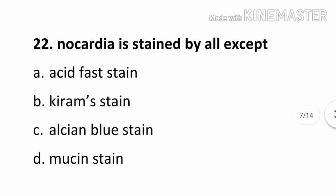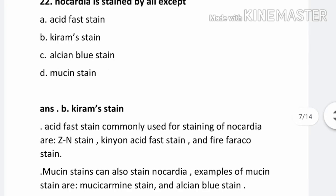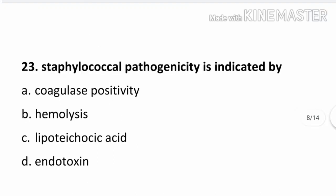Question number 22. Nocardia is stained by all except: Option A. Acid fast stain, Option B. Chyrem's stain, Option C. Alcian blue stain, Option D. Mucin stain. The correct answer is B. Chyrem's stain. Nocardia is not stained by Chyrem's stain. Acid fast stain, commonly used for staining of Nocardia — Z-N stain and Kinyoun's acid fast stain and Farako stain. Mucin stain can also stain Nocardia; examples of mucin stain are Mucicarmine stain and Alcian blue stain.